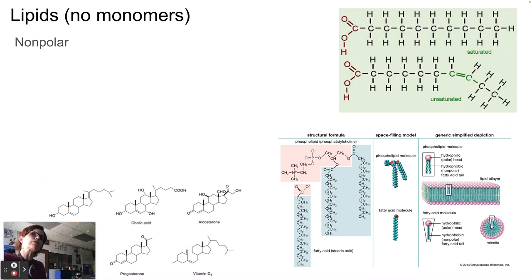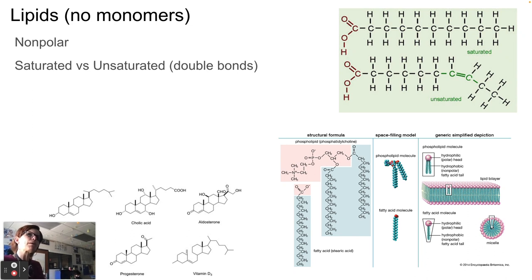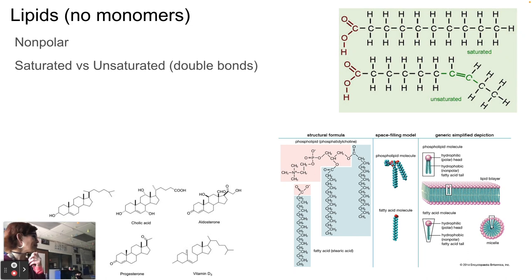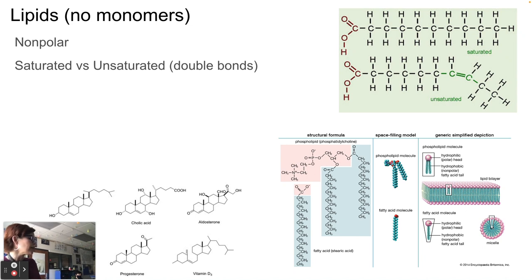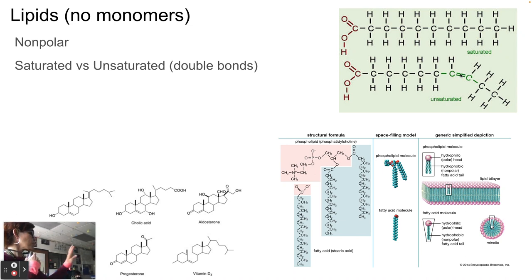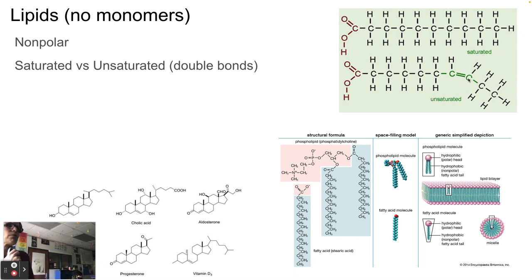Lipids have no monomers, no building blocks. Things you remember about lipids: they're nonpolar — lots of carbons and hydrogens. Saturated versus unsaturated: saturated (upper right corner) has all single bonds between carbons — though there's always a double bond between the carbon and one oxygen as part of the carboxyl group. If there's a double bond between carbons themselves, it causes a bend in the lipid — that would be an unsaturated fat, because it's not fully saturated with hydrogens. Those carbons are missing two hydrogens because instead of bonding with hydrogen, they're bonding with each other.